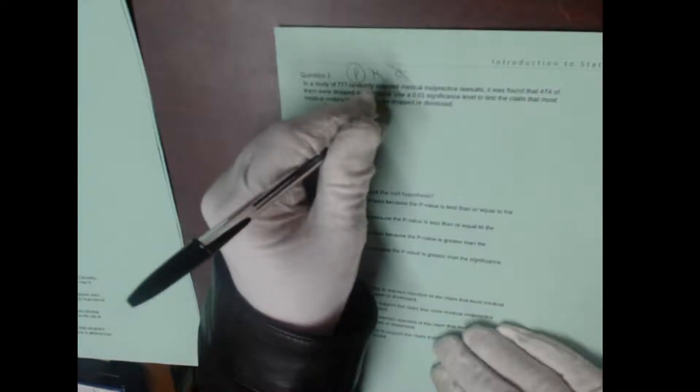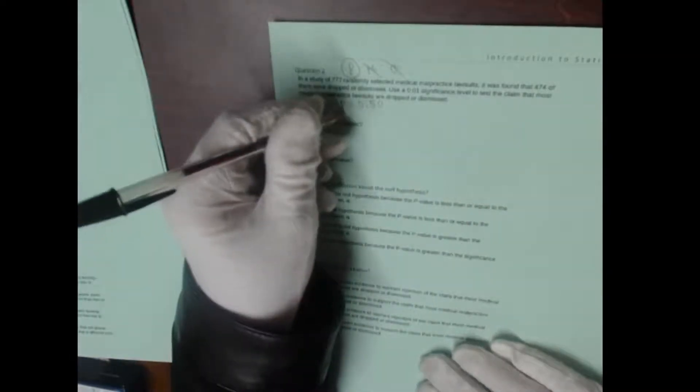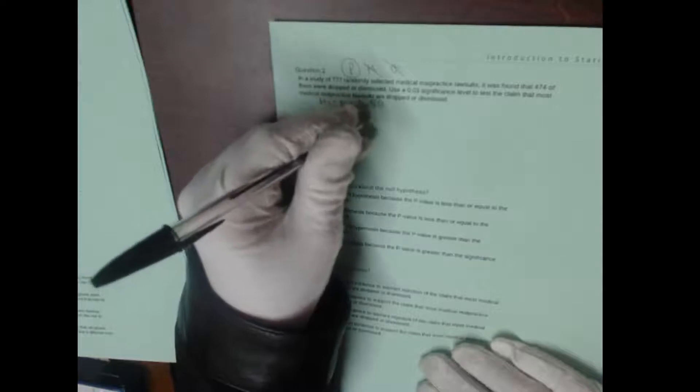So it's p equals will be our null hypothesis. Now, the question is, we're testing the claim that most of the medical malpractice lawsuits are dropped. That's the claim. So what that means is we need to have our null hypothesis be that p is equal to 0.50. That's the dividing line between most or not most. Our claim is that most of them are dropped, and so that means our alternative hypothesis will be that most of them are dropped. So this time it's a one tail test because of the greater than sign. Null hypothesis is equals 0.50, alternate hypothesis is that most of them are rejected.